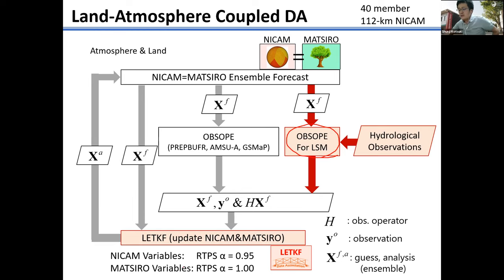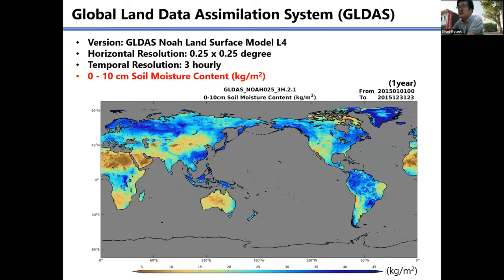We used relaxation to prior spread for covariance inflation. For the atmospheric analysis variables, we used a relaxation coefficient of 0.95. For land variables, adding the ensemble forecast is insufficient to maintain the ensemble spread of the land variables, so we applied relaxation to prior spread with a coefficient of 1.00 for land variables. This study assimilates global soil moisture observations from SMOS. We used the dispersion of the land surface model variables and assumed it represents the surface soil moisture, since it can be observed from the satellite.